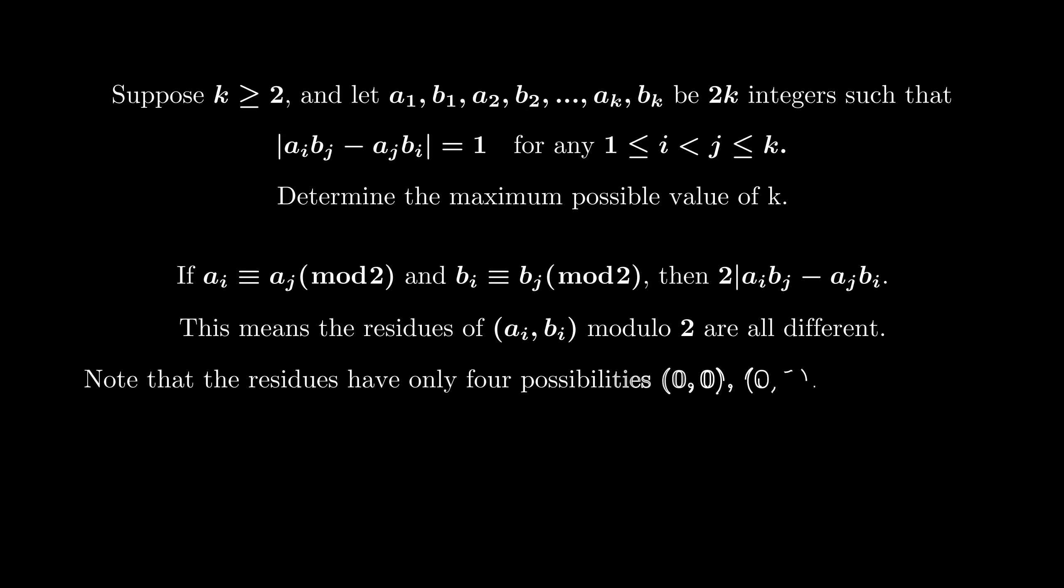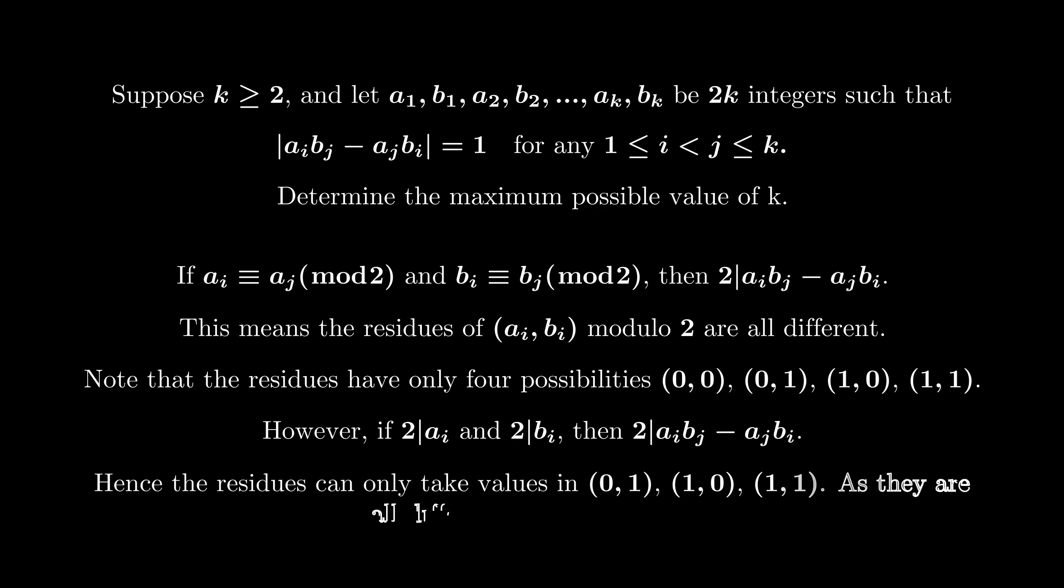Note that the residuals have only four possibilities: (0,0), (0,1), (1,0) or (1,1). However, if 2|ai and 2|bi, then 2|aibj - ajbi. Hence the residuals can only take values in (0,1), (1,0), (1,1). As they are all different, we have k is less than 3.